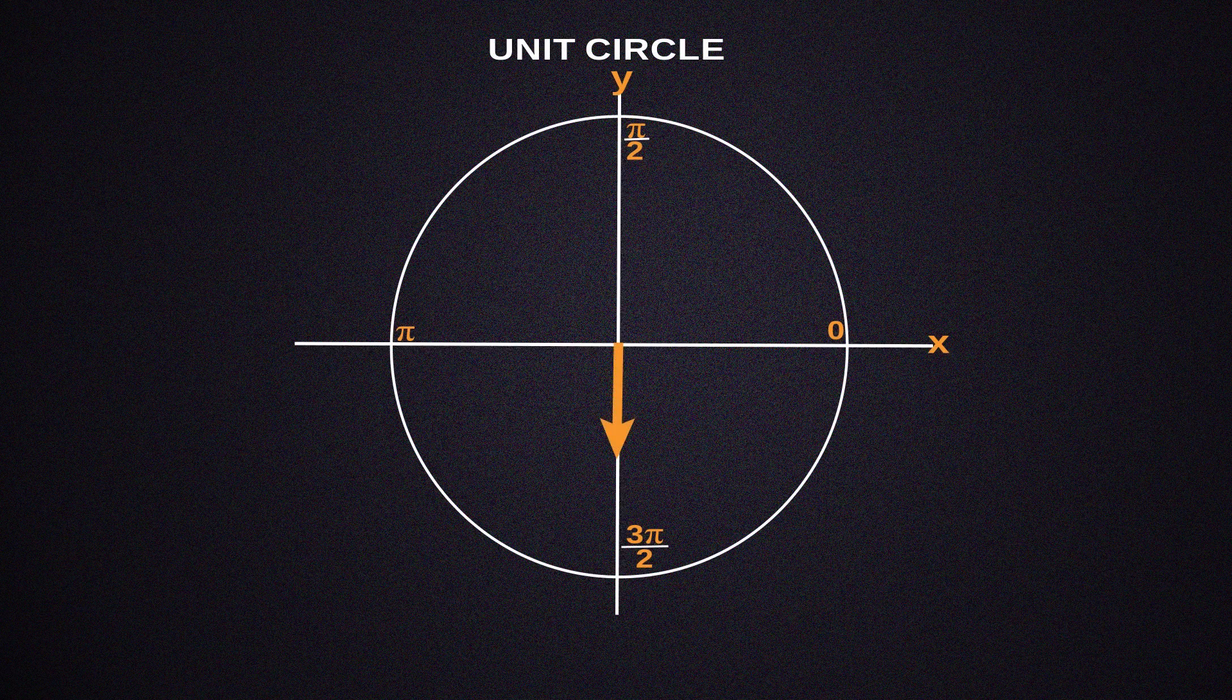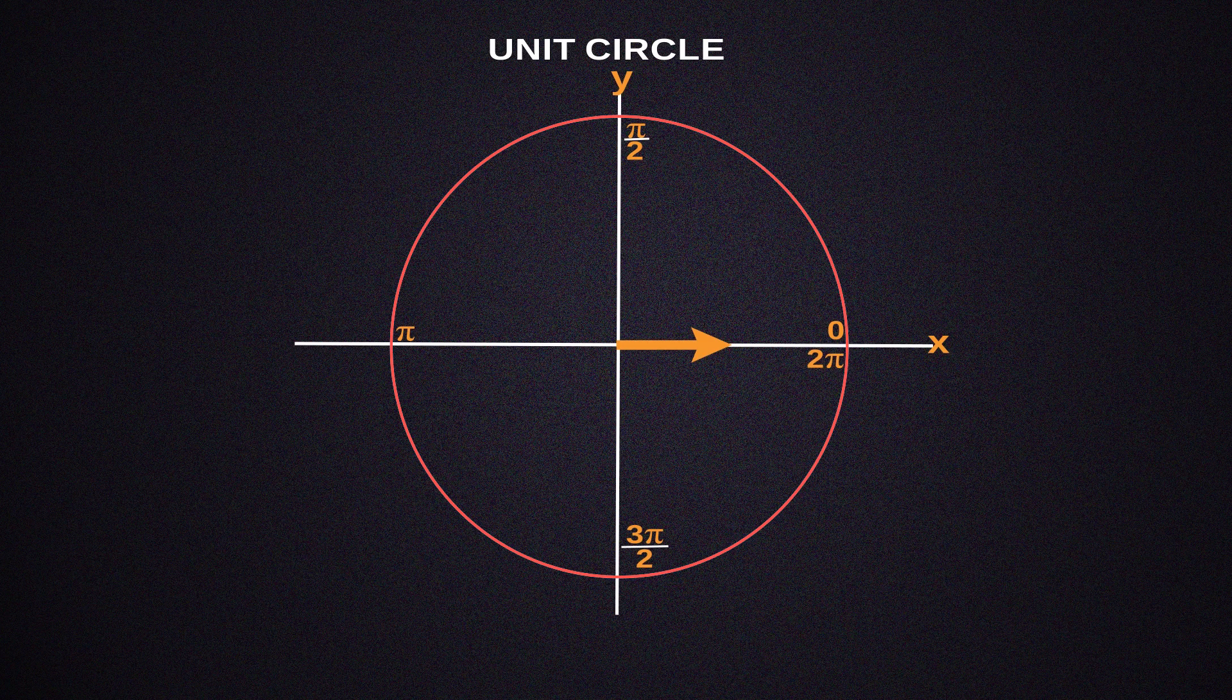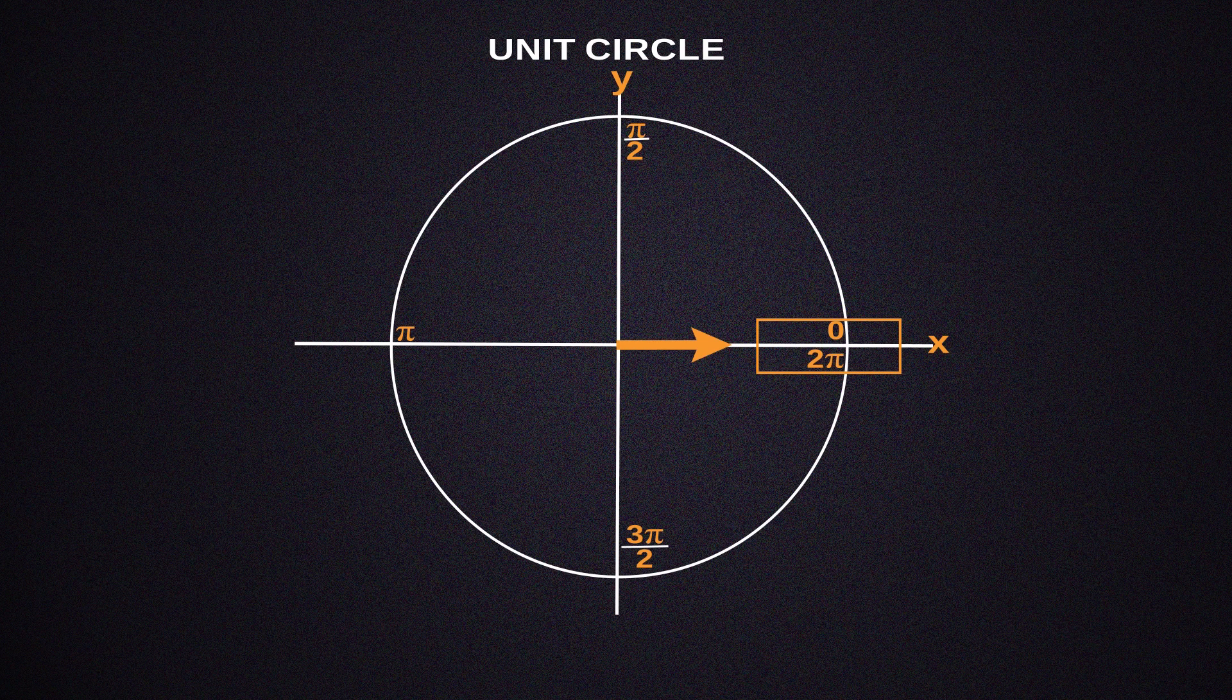Now that we have moved another quarter circle, we can obtain 2π. We have now completed the circle. And take note that this angle in this position is both zero and 2π.